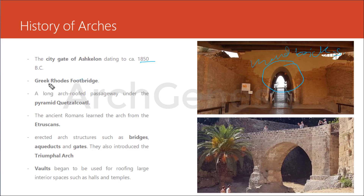Then there is the Greek Rhodes footbridge — an example of a voussoir arch. It is an ancient Greek arch bridge in the city of Rhodes in Greece, dating to the 4th century BC or early Hellenistic period. The modern structure represents the oldest known Greek bridge with a voussoir arch made with porous limestone blocks. In 2010, a robot discovered a long arched-roofed passageway under the Pyramid of Quetzalcoatl, which stands in the ancient city of Teotihuacan north of Mexico City, dated around 200 AD.